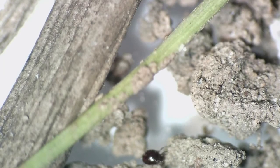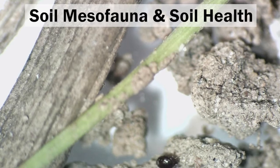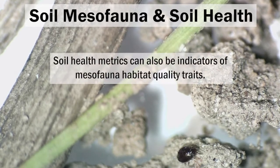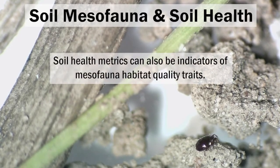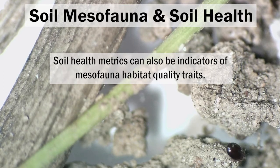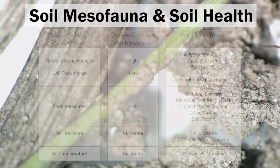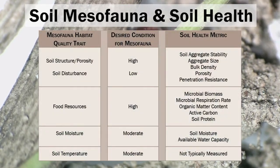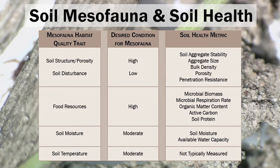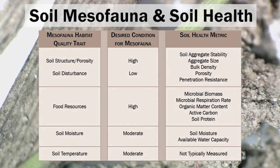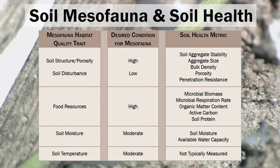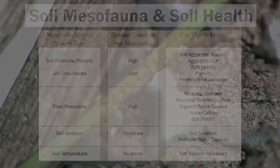Soil mesofauna can be good predictors of soil health, since commonly used soil health metrics are related to different mesofauna habitat quality traits. Mesofauna thrive in soil environments with good porosity, lower disturbance, and plenty of food resources like organic matter. These habitat quality traits are captured in soil health metrics like soil aggregate stability, microbial biomass, microbial respiration, and soil organic matter content.